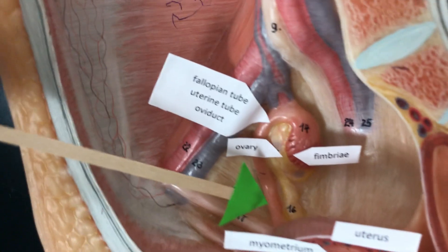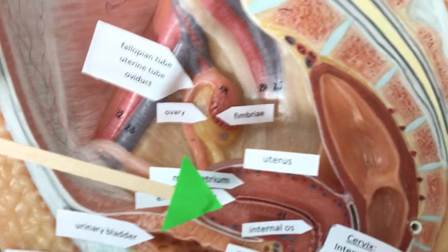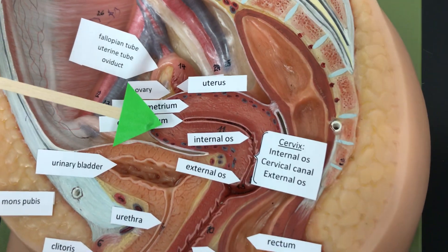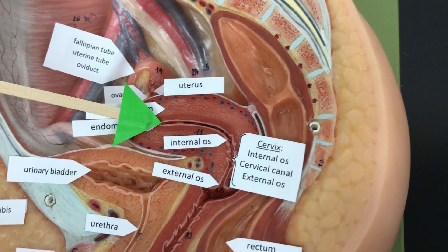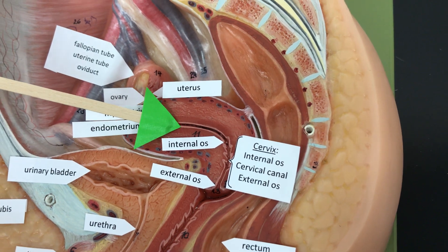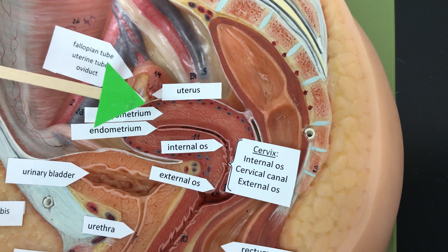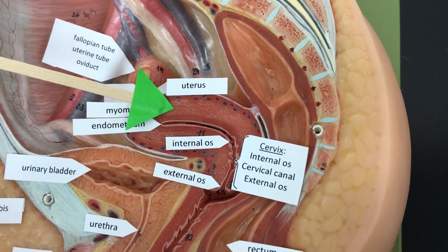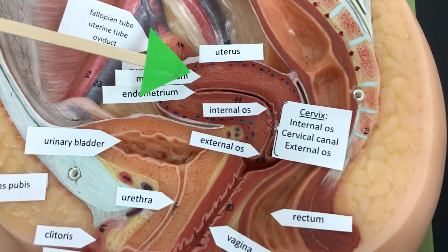It will travel to the uterus, and if it's fertilized then it will implant in the endometrium layer. The myometrium layer is used for uterine contractions.